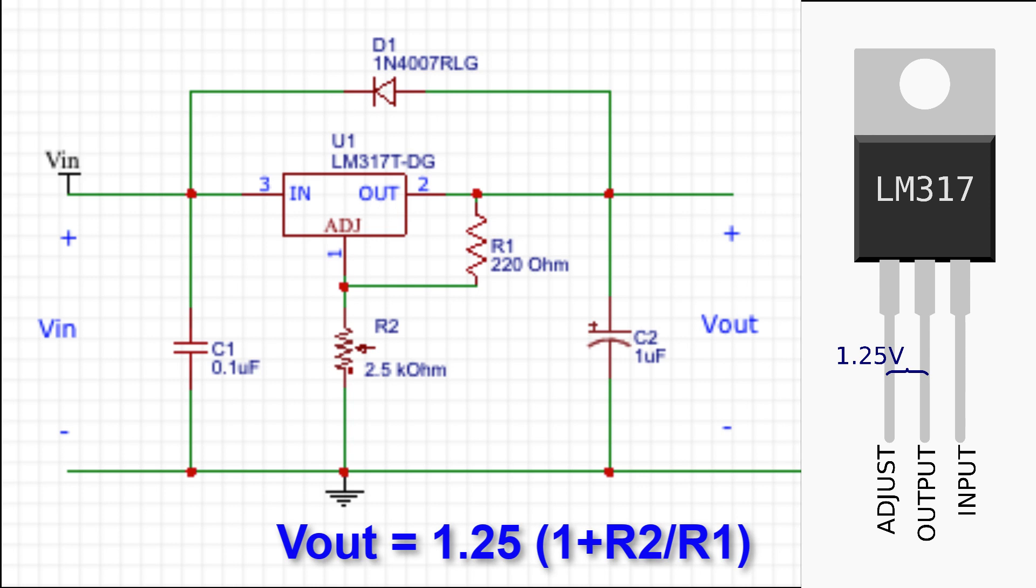To determine the output voltage, you can use this formula. In my case, I am using 220 ohm for R1 and the potentiometer with a value of 2.5 kilo ohm for R2.